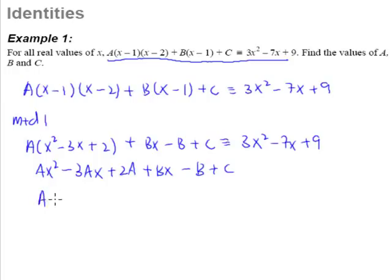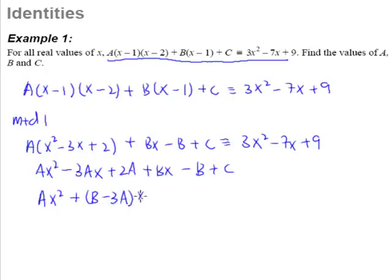Now what we do next is arrange x² terms, x terms, and constants all together. We have -3Ax and +Bx, so when grouped together, this becomes (B - 3A)x. As for the last term, the constant, we have 2A - B + C. This is equivalent to 3x² - 7x + 9.